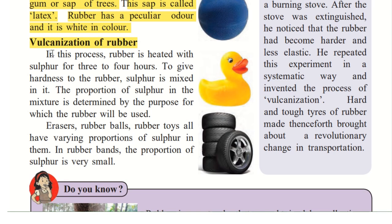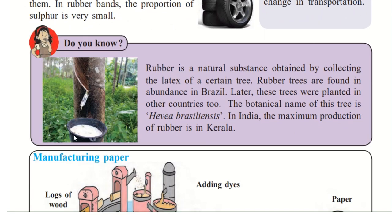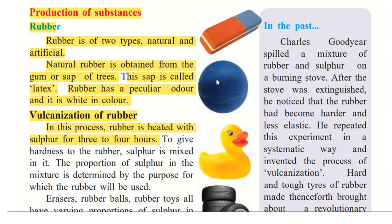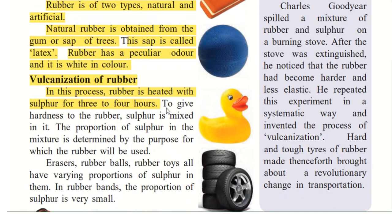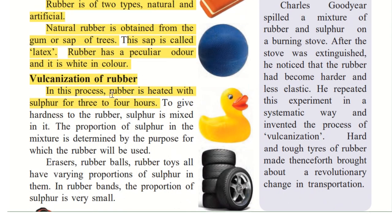Let us understand this process. In this process, rubber is heated with sulphur for 3 to 4 hours. Sulphur is added to the rubber solution — if you look at the rubber solution, it is like liquid. But all the finished materials are hard; they are not liquid, they are solid. So in order to make them hard, that is to change a liquid into a solid, the rubber solution is mixed with sulphur and it is heated for 3 to 4 hours to give hardness to the rubber.